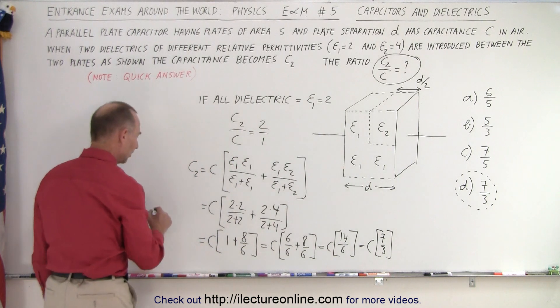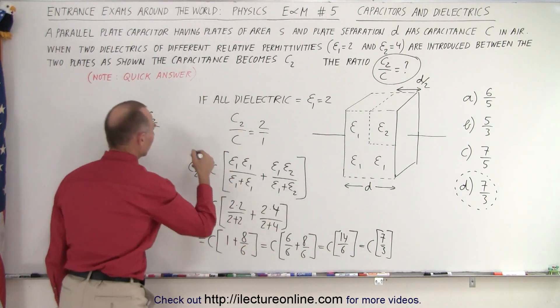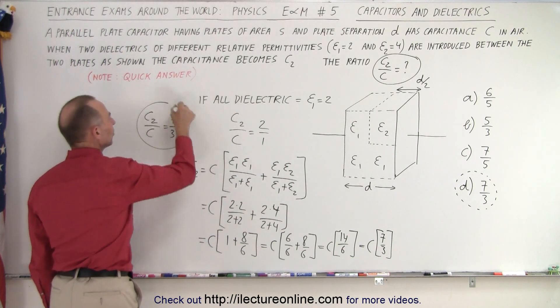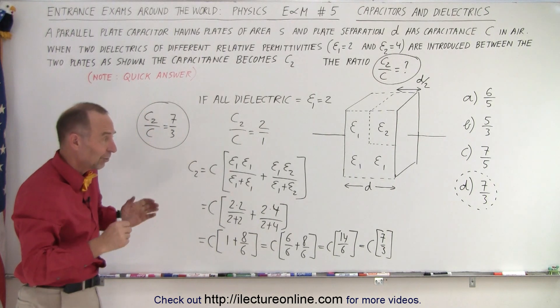Which is equal to c times 7 over 3. And there's the ratio. In other words, you could say that c2 over c, when we bring the c down, is equal to 7 over 3.